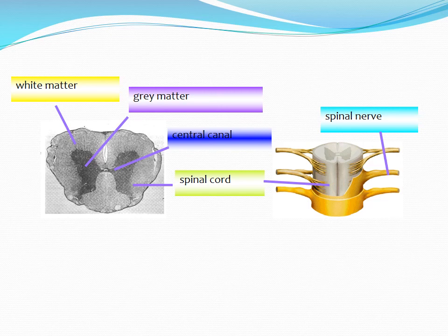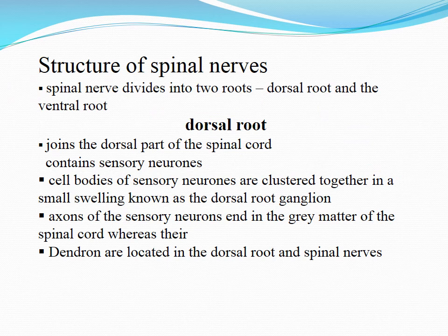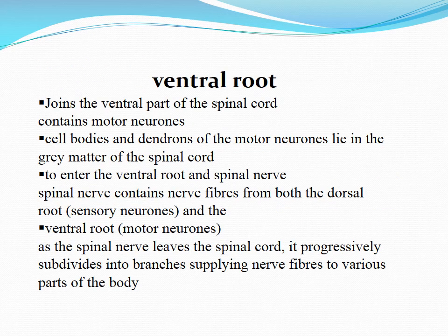From the gray matter arise the spinal nerves. Spinal nerves divide into two roots: the dorsal root and the ventral root. The dorsal root joins the dorsal part of the spinal cord and contains sensory neurons. Cell bodies of sensory neurons are clustered together in small swellings known as the dorsal root ganglion. Axons of sensory neurons enter the gray matter of the spinal cord, while their dendrons are located in the dorsal root. The ventral root joins the ventral part of the spinal cord and contains motor neurons.